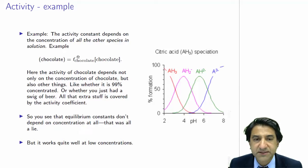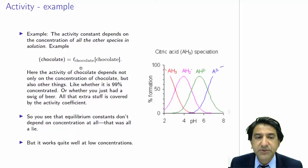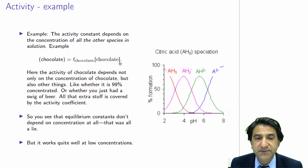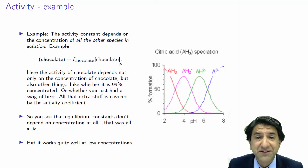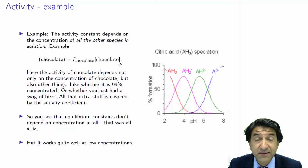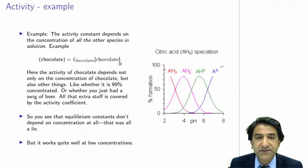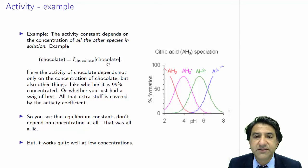All that extra stuff is covered by this activity coefficient. So what you need to see is that equilibrium constants do not just depend on the concentration of the species you're interested in — the activity of a particular species depends on all the species. It's very lucky that at low concentration those activities are equal to concentrations. This works well at low concentrations; at high concentrations we need to take countermeasures.